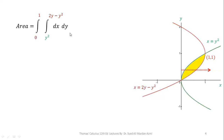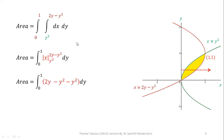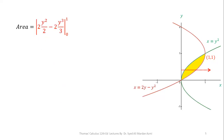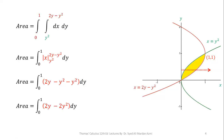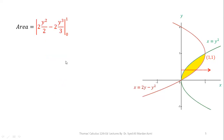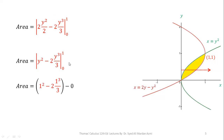We now perform the integration. The integral of dx from y² to 2y − y² gives x evaluated at those limits, which simplifies to 2y − 2y². Integrating with respect to y from 0 to 1: the integral of 2y is y²/2 · 2 = y², and the integral of 2y² is 2y³/3. Applying the fundamental theorem of calculus with upper limit 1 and lower limit 0, the lower limit gives 0. The final answer for the area is 1/3.